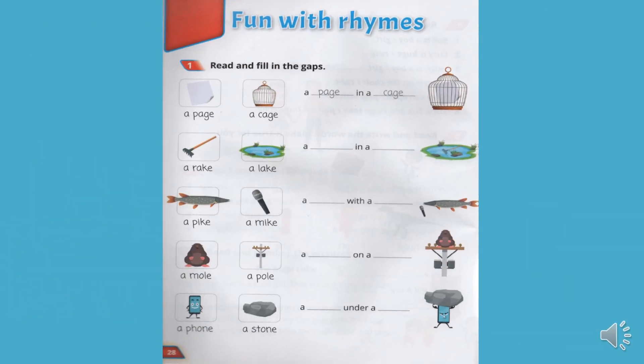Page number 28. Сторінка 28. The topic is fun with rhymes. Весело з римами. Let's do activity number 1. Давайте виконаємо перше завдання. Read and fill in the gaps. Прочитайте та заповніть пропущені місця.